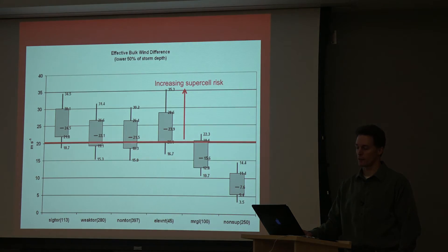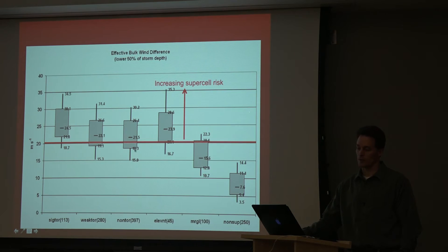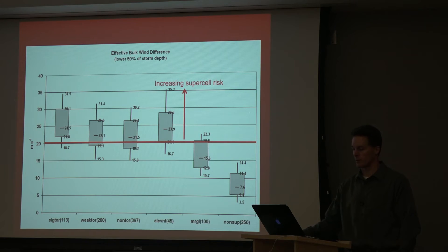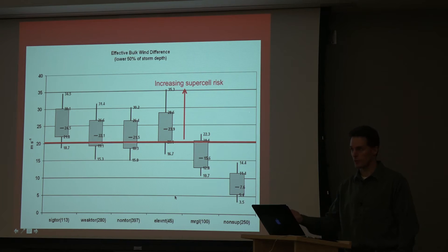Here's what it looks like: another box-and-whisker plot with the effective bulk wind difference. Significant tornadic storms are on the left, then elevated tornadic, all supercells. They typically have around 20 meters per second, which is about 40 knots — typical of supercell environments. Elevated, surface-based, strong or weak tornadic, non-tornadic supercells all look pretty similar. Marginal tornadic storms straddle values around 20 m/s or 40 knots, and non-supercells fall well below that. Comparing non-supercell storms to any supercell group shows virtually no overlap in the distributions — a strong discriminating signal between supercell and non-supercell using this effective bulk wind difference.